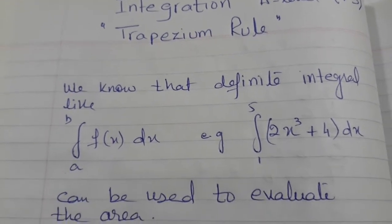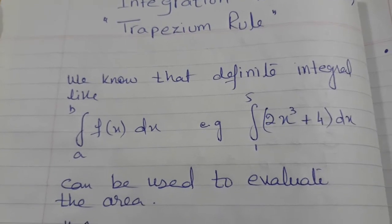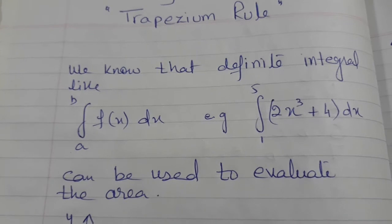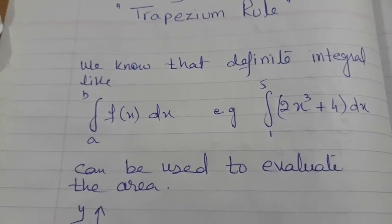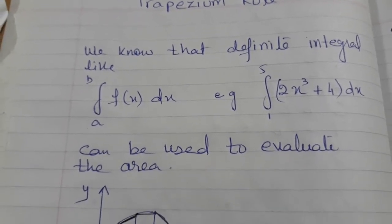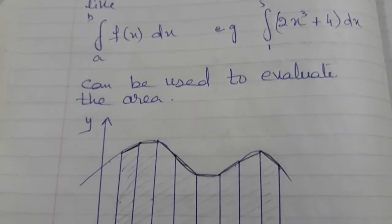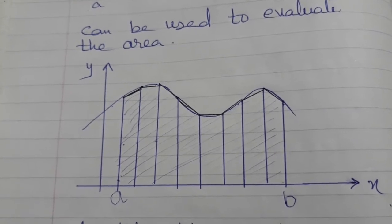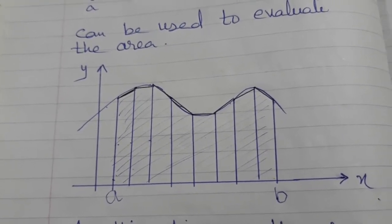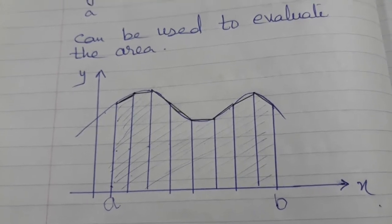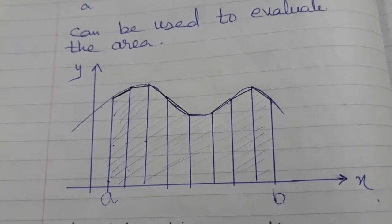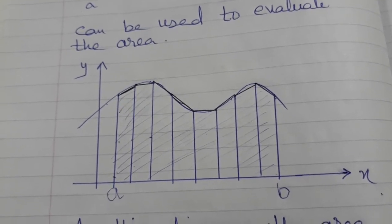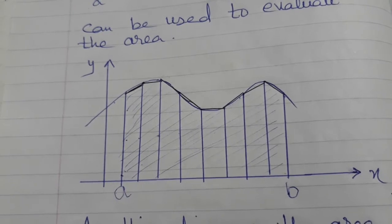We know that the definite integral gives us the area under the curve and we can easily find it out. But if we have to find the area under the curve with the help of the trapezium rule, I have divided the area under the curve into strips, and the shape of each strip is approximately like a trapezium. If I find out the area of each trapezium and add them up, I will get the approximate area under the curve.